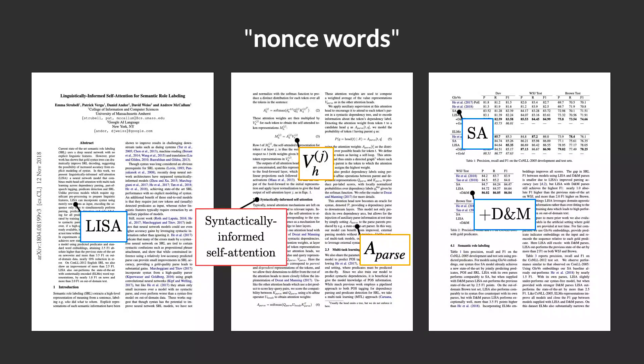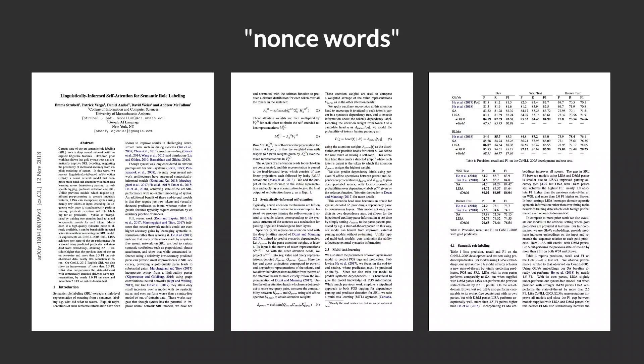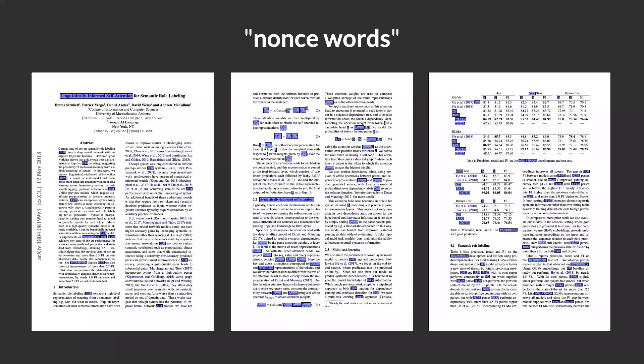nonce words are like temporary variables in a programming language. They are defined for use only in the paper and can impose a memory burden for the reader to learn. They are often cryptic. It can be hard to infer a nonce word's meaning from context, and a paper can contain hundreds of them, densely packed together.